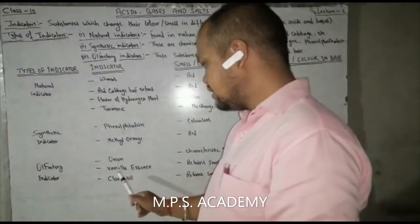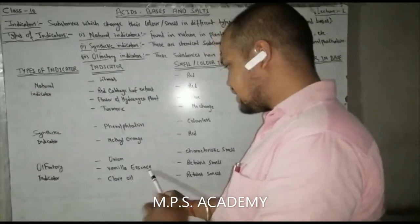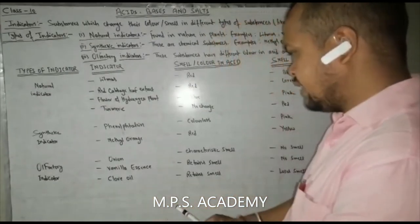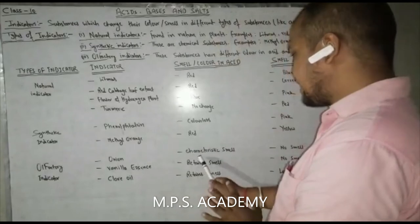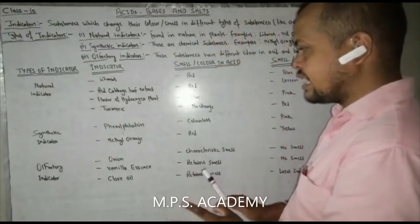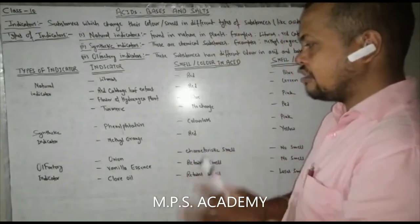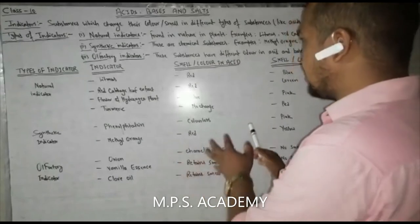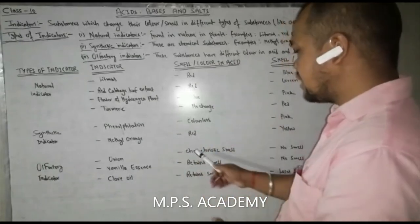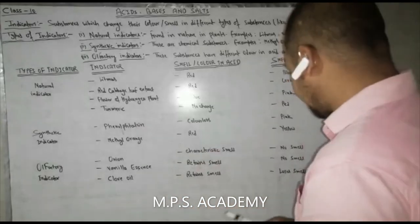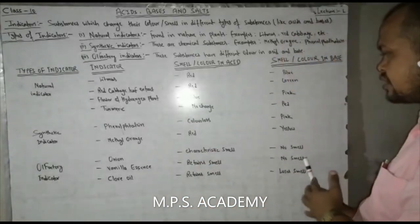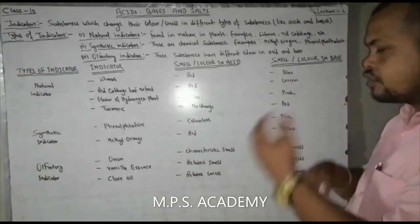Olfactory indicators include onion, vanilla essence, and clove oil. Onion extract is used as a factory indicator — in an acid solution you can smell it, but in a basic solution the smell is reduced or removed.